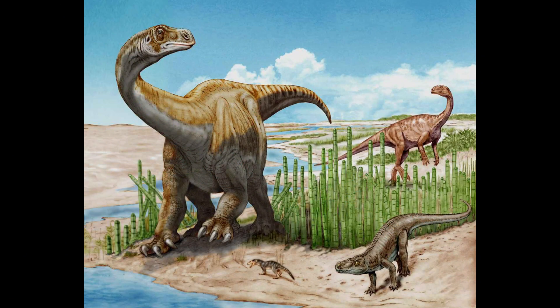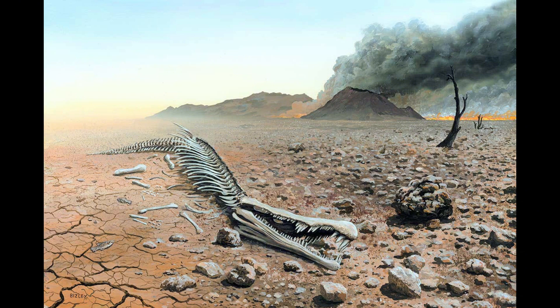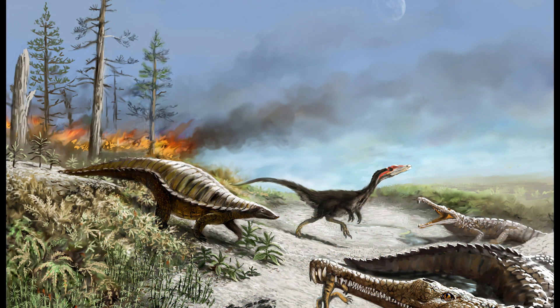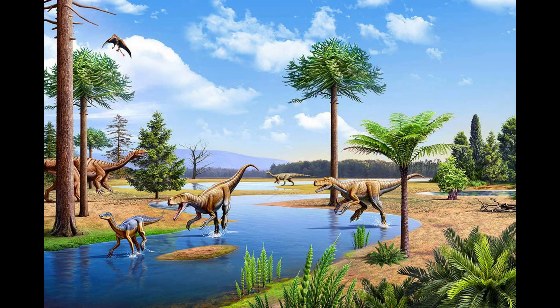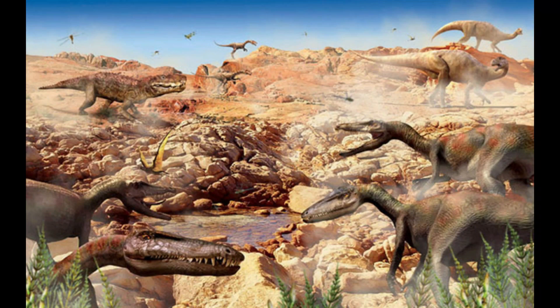Towards the end of the period, dinosaurs competed to be the rulers of the Earth, but they would still have to survive an extinction event first. 201 million years ago, the Triassic extinction occurred, and it's thought to be the event that allowed the dinosaurs to take over from the synapsids. This event wiped out 76% of Earth's species. The Triassic extinction's cause is hotly debated — one popular theory is climate change.